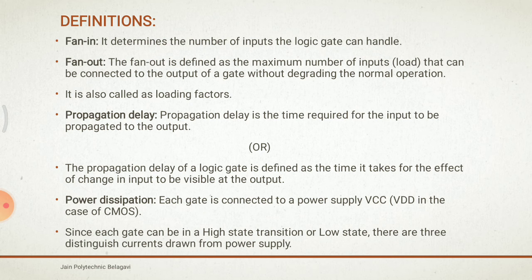Propagation delay is the time required for the input signal to propagate to the output — whatever time is needed from input to output is known as propagation delay. It is also defined as the time taken for the effect of a change in the input to appear at the visible output. You provide an input, wait some time, and then get the output — that waiting time is the propagation delay.